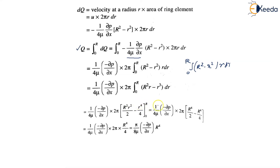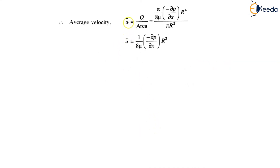After substitution the result gives Q equals pi upon 8 mu into minus del p upon del x into R to the power 4. The average velocity u-bar equals discharge upon area, which gives u-bar equals 1 upon 8 mu into minus del p upon del x into R square. This is equation number 5.